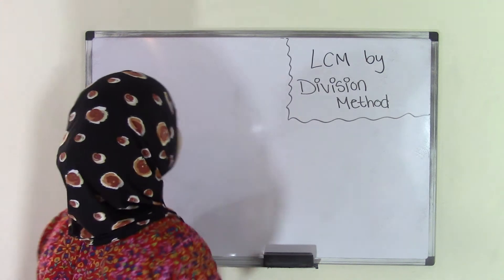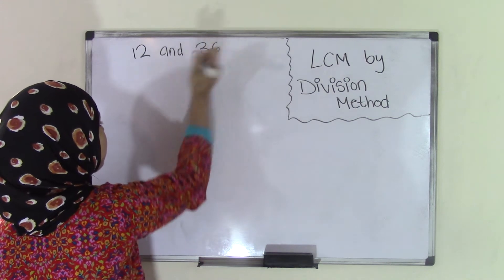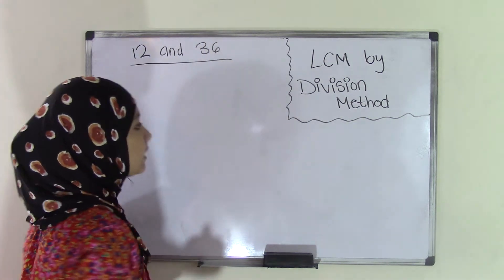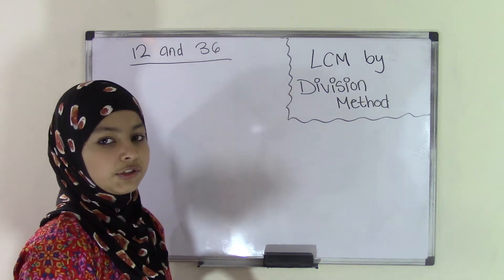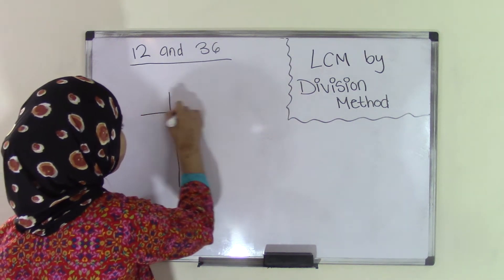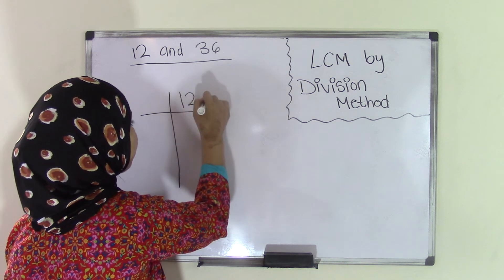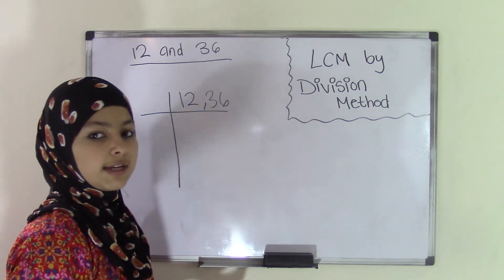Let's take the two numbers 12 and 36. To find the LCM of these numbers, just like we were finding the factors of numbers, we'll list them down like this: 12 separated by a comma, then 36. Both of them come in as dividends.